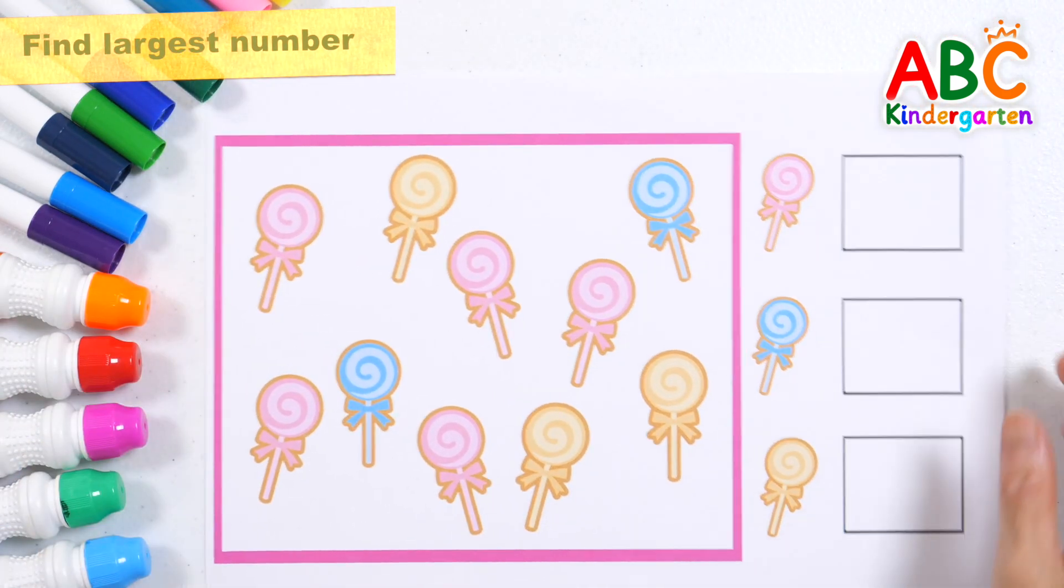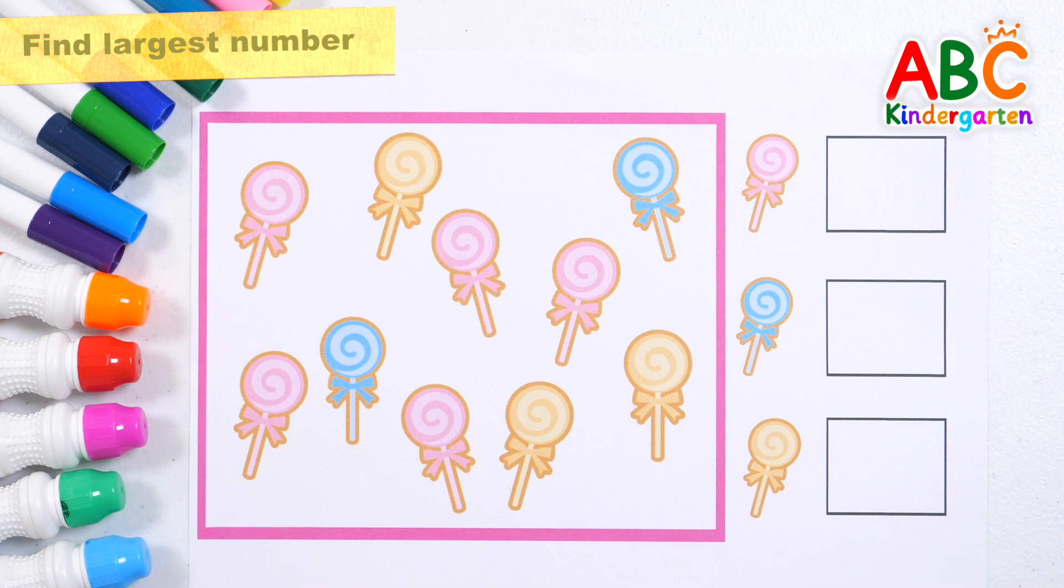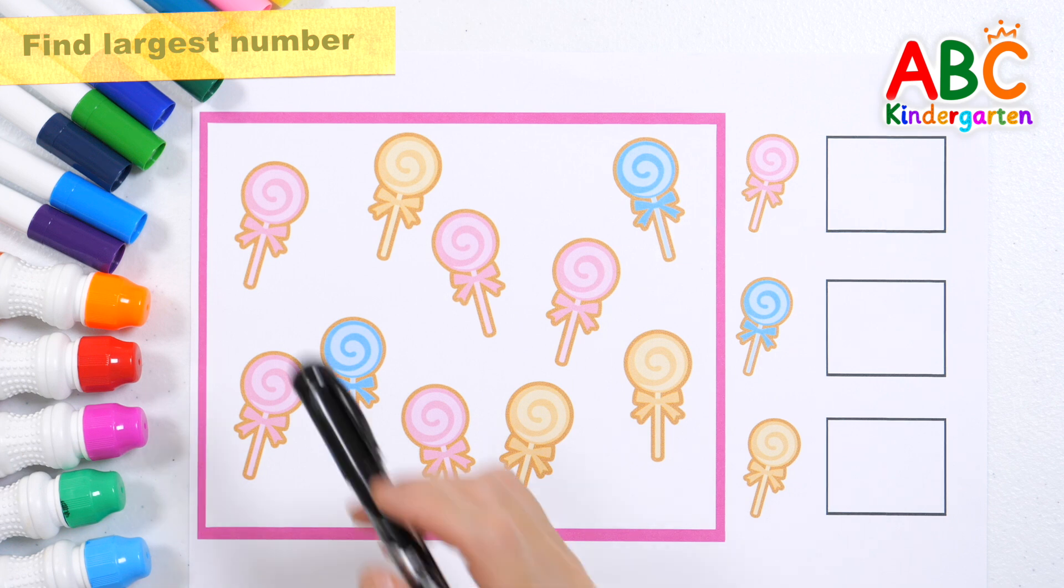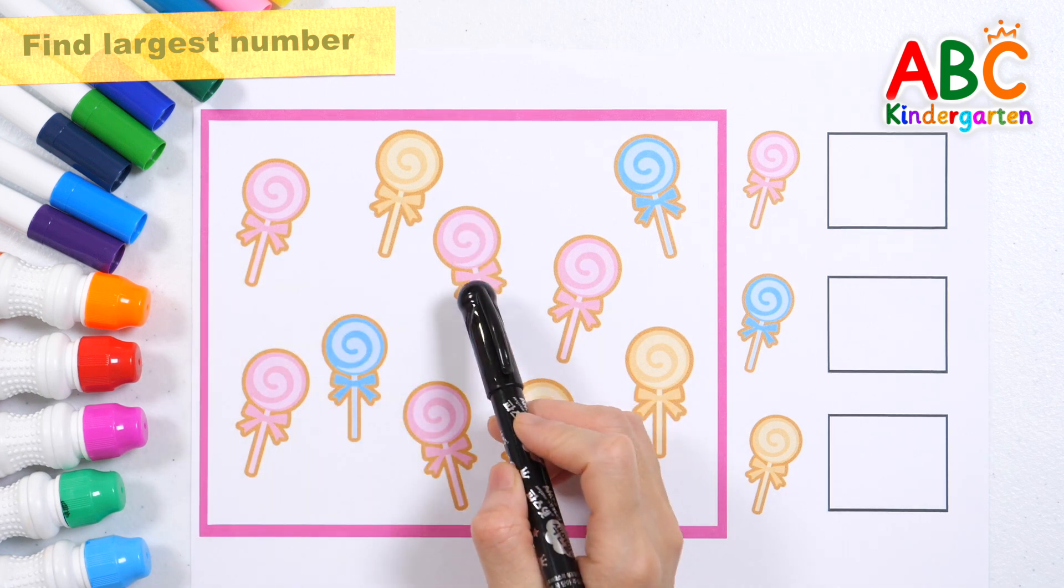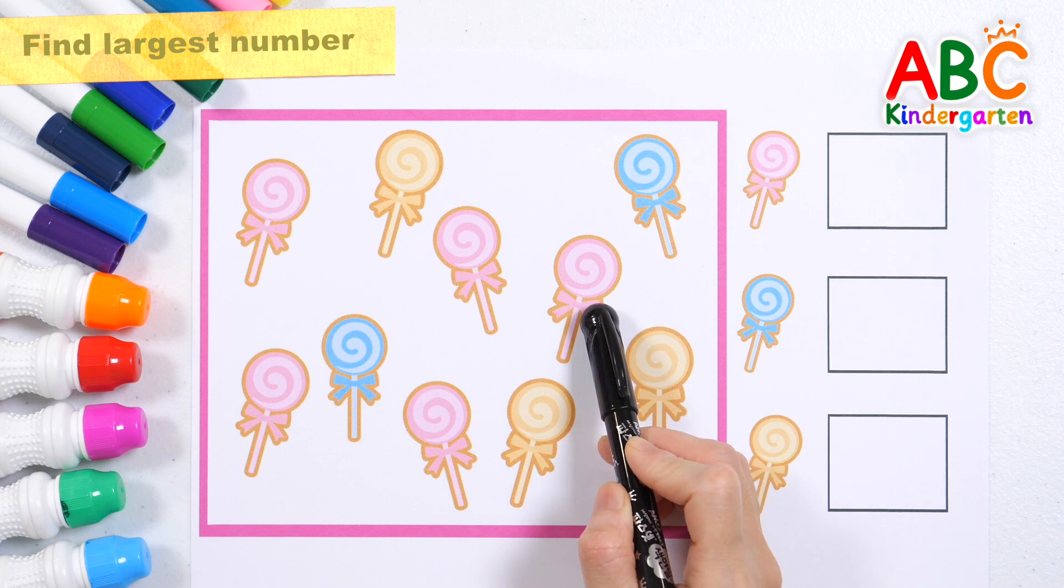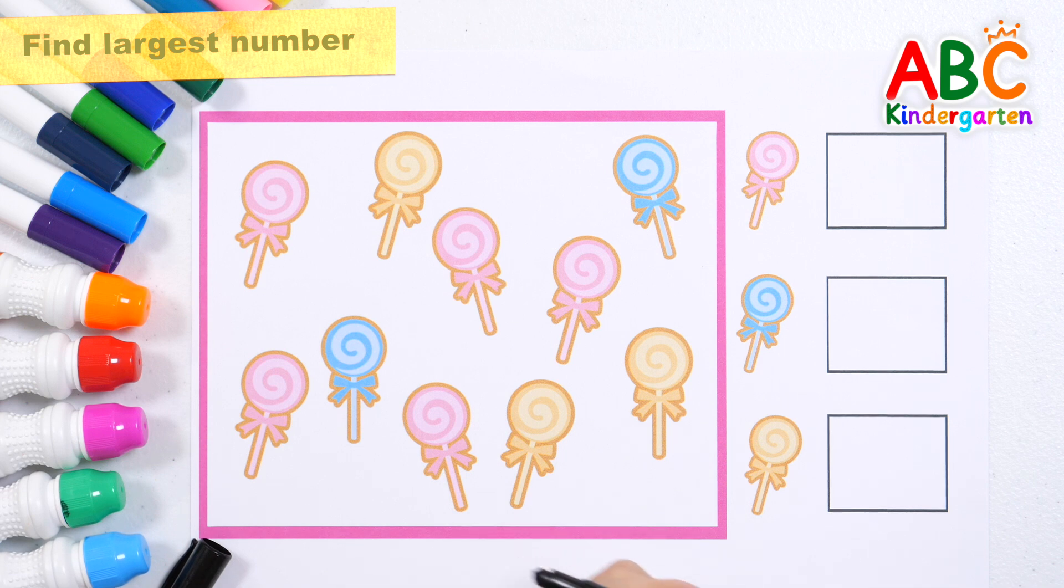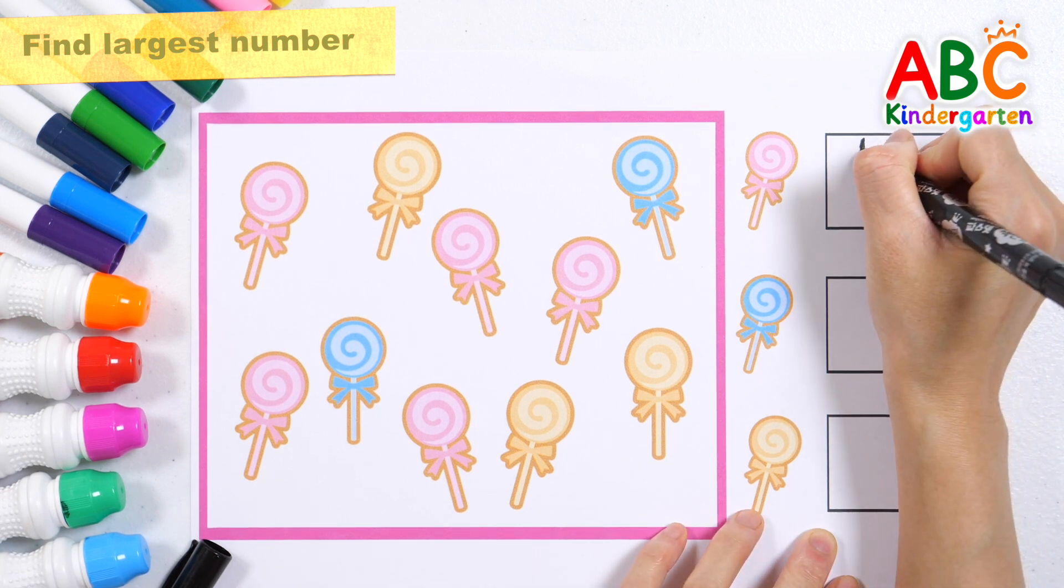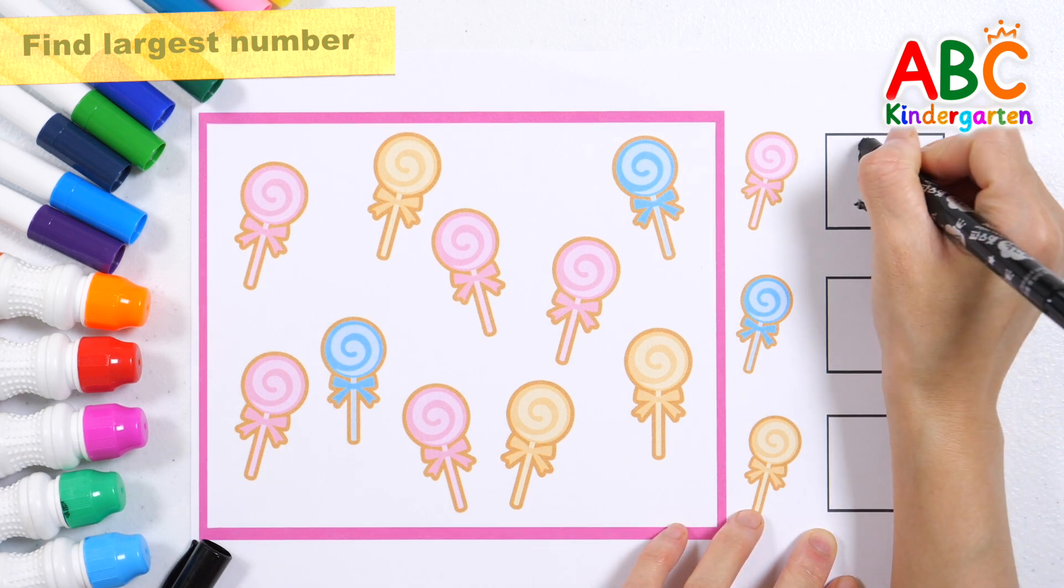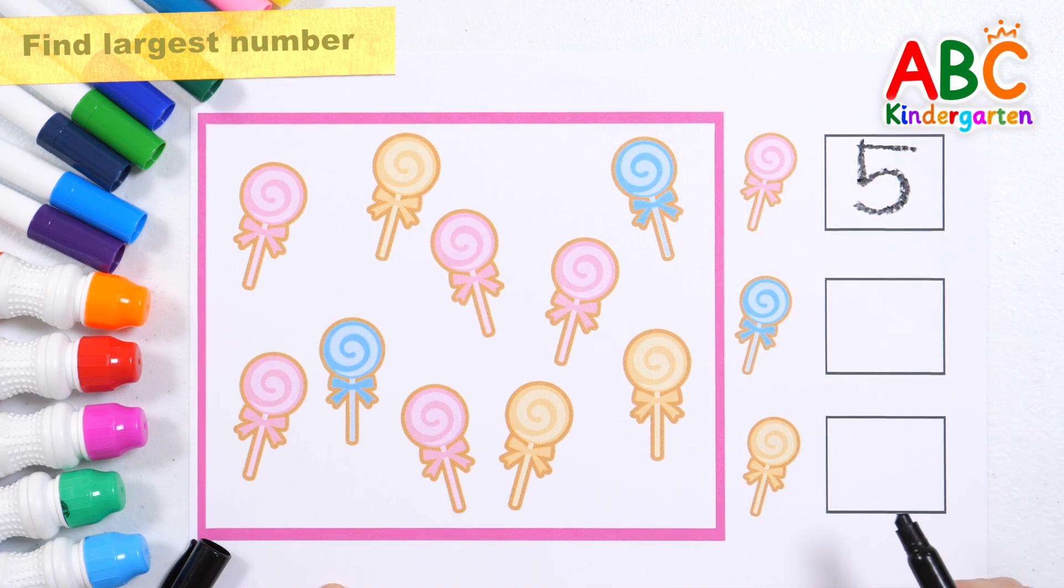These are lollipops in three colors: pink, blue, and yellow. Let's count how many lollipops are in each color. One. Two. Three, four, five. Very good!